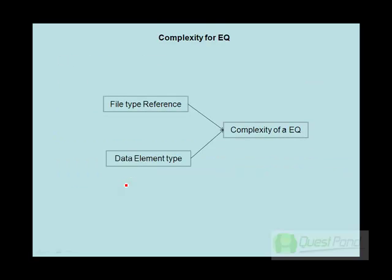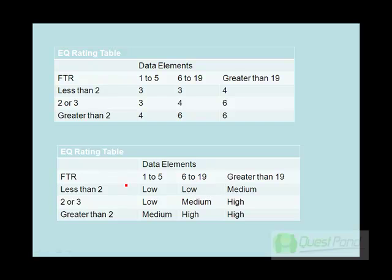The complexity of EQs depends on two things: FTR and DETs. Here is the complexity table of EQ. We can say that EQs are basically simple outputs. Compared to EOs, which have complex outputs — they aggregate tables, take data from multiple ILFs and EIFs, merge them, and display them — EQs simply go to one ILF and display the information.